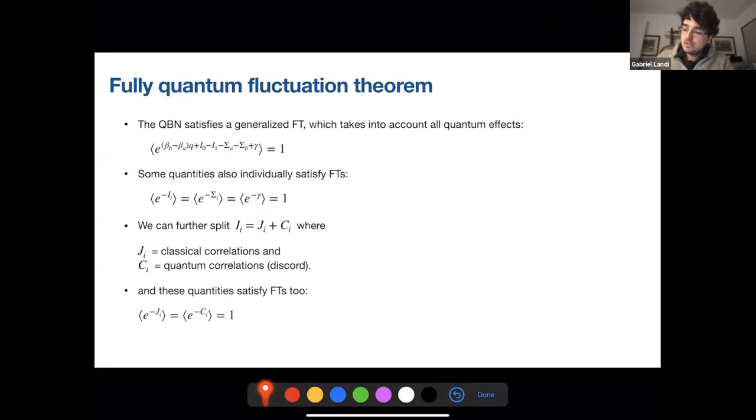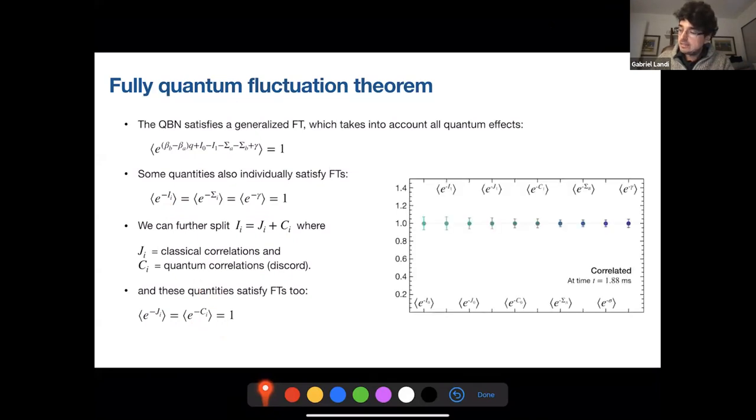And not only there's a global fluctuation theorem for these quantities, but there are also local individual fluctuation theorems for these quantities. And it's nice that we can split these informational, stochastic informations into a classical correlation and a quantum correlation in the sense of discord. And these two satisfy individual fluctuation theorems. So not only have fluctuation theorems for the total mutual information, but for the individual quantum and classical components. And this is the experimental result. So these are all the tons of quantities here and the average of E minus that thing. And you see that it's always around one here.